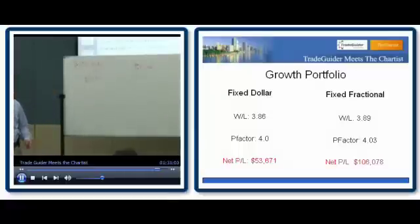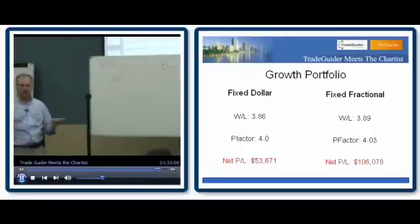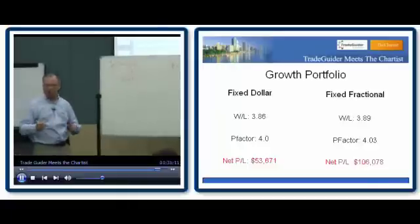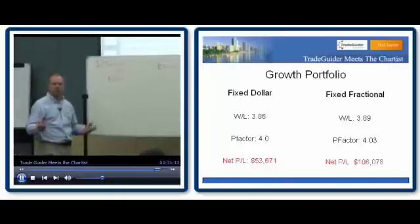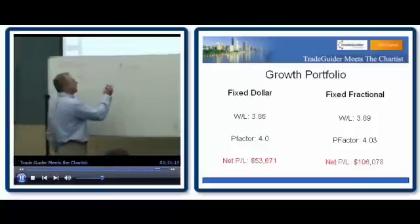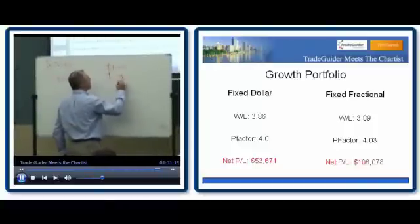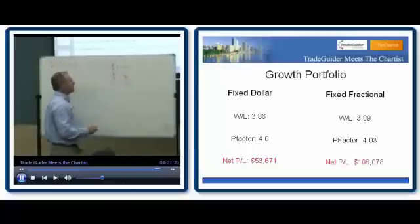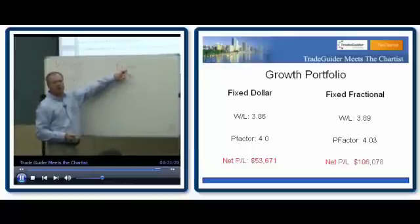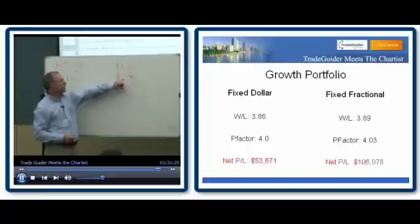If we buy a stock at a dollar, the first thing we have to do is determine where our protective stop loss is, and that should be determined by the technical picture of the stock. You can pick a level of support, whatever it may be, put your stop under there. So you put your stop down at say 90 cents.